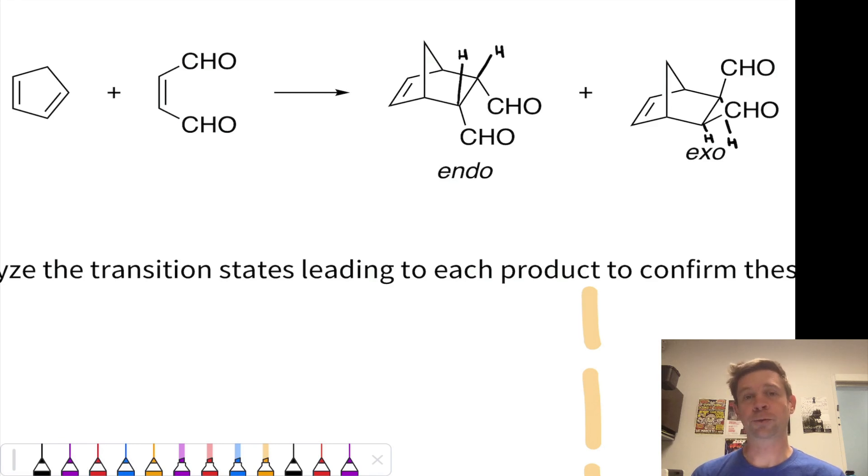Because the Diels-Alder reaction, or the 4 plus 2 cycloaddition, is pericyclic, the reaction is stereospecific with respect to the dienophile. If the dienophile starts out cis, it ends up cis, and if it starts out trans, it ends up trans.